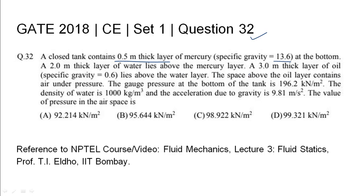layer of oil, specific gravity 0.6, lies above the water layer. The space above the oil layer contains air under pressure. The gauge pressure at the bottom of the tank is 196.2 kN/m². The density of water is 1000 kg/m³ and the acceleration due to gravity is 9.81 m/s². The value